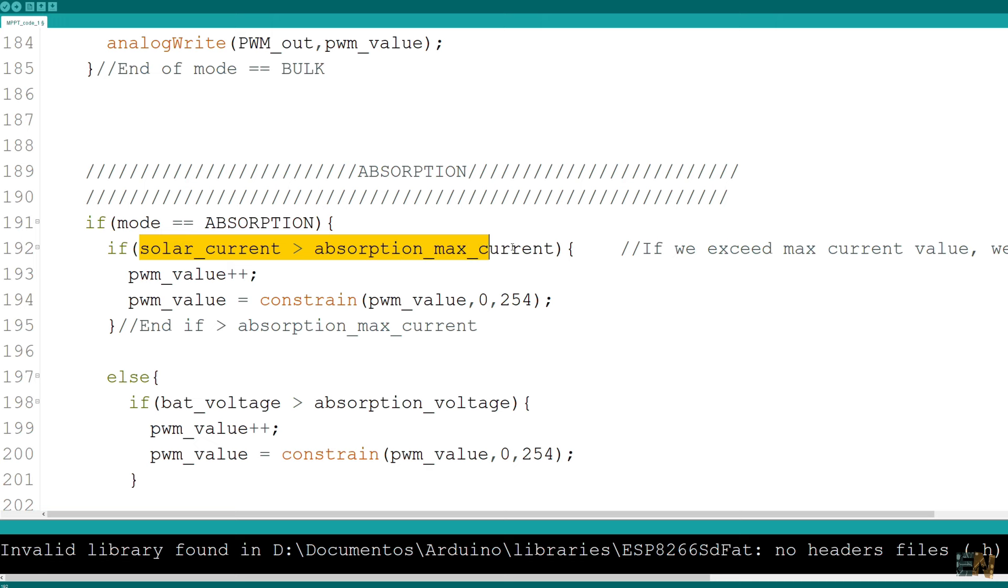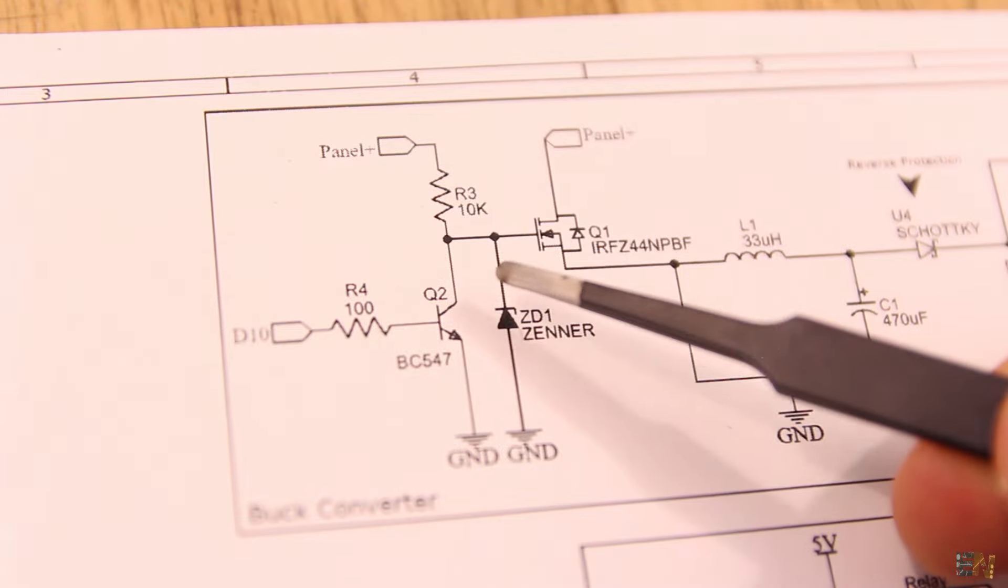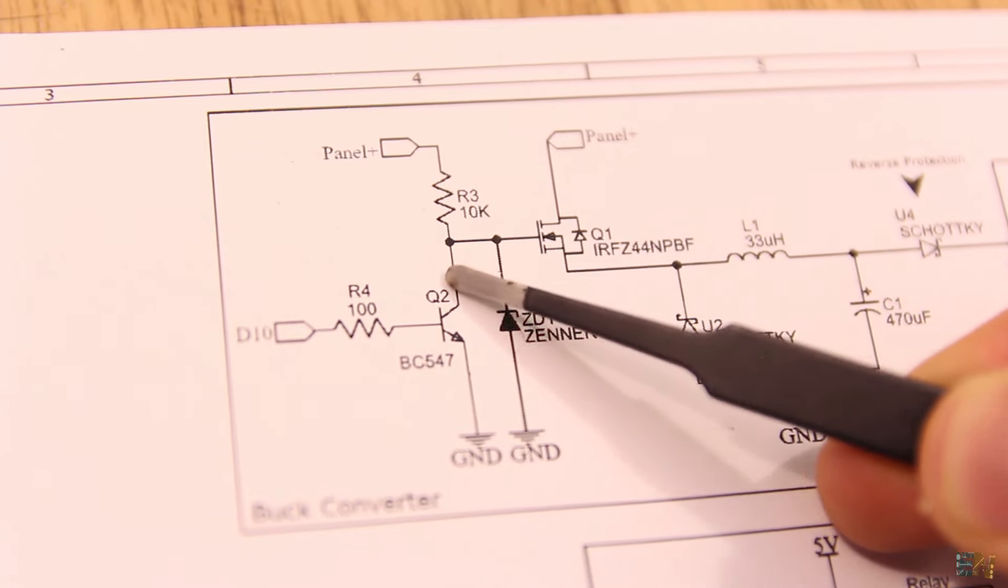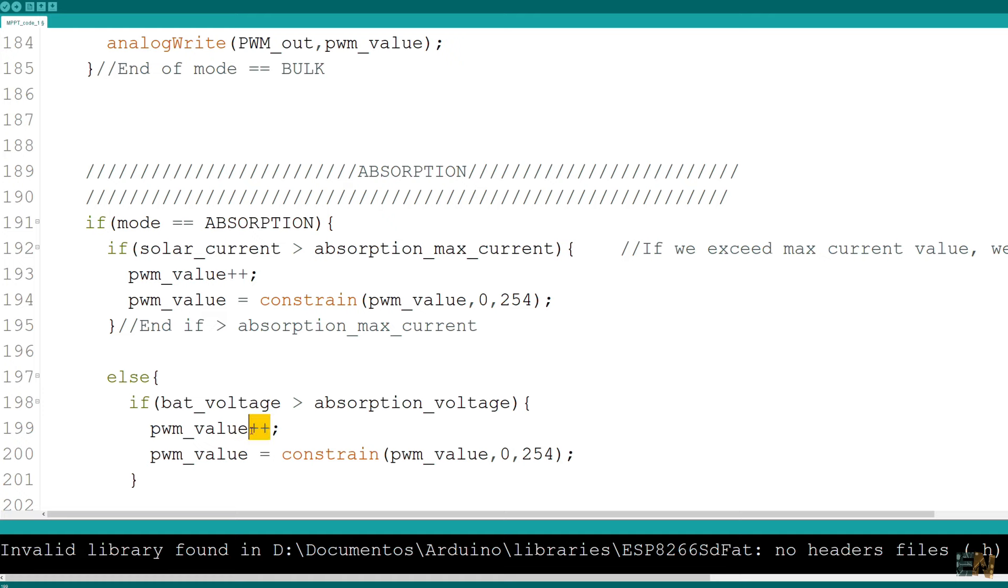For that, in the code, anytime the maximum current is reached in any of the modes, we lower the PWM signal. By the way, to lower the PWM signal, we actually increase the PWM value. That's because I'm controlling the MOSFET with the BJT transistor at the gate and that will act as an inverter. So when the PWM signal is high, the BJT output is low and vice versa. Have that in mind.